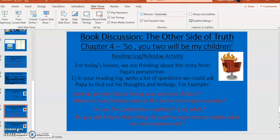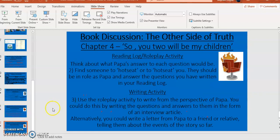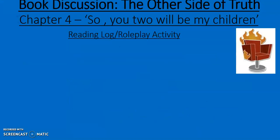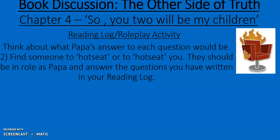Once you've done that first part of the activity, move on to part 2. You'll need someone else with you for this part. Think about what Papa's answer to each question would be. Find someone to either sit in the hot seat or to put you in the hot seat. The person in the hot seat is going to go into role as Papa and answer the questions you've written in your reading log.